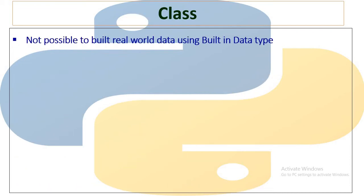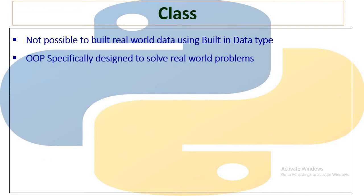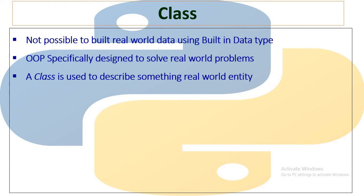Now, class - almost every language has some basic data types such as integer, float, boolean and so on. But not all real world objects can be represented using these built-in data types. Therefore, object oriented programming was specifically designed to solve these real world problems. It allows its user to create user-defined data types in the form of a class. A class is used to describe something in the world such as occurrences, things, external entities and so on. A class also provides a template or blueprint that describes the structure and behavior of a set of similar objects.